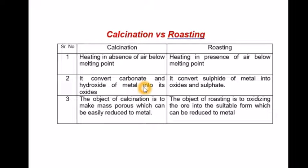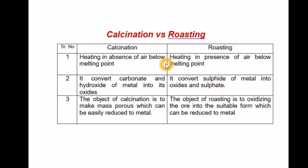In this way, today we learned about calcination and roasting — important terms in metallurgy for concentration of ore. In the next video, we will see about the reduction of ore by smelting, aluminothermic, and electrolysis processes. Thank you for watching this video.